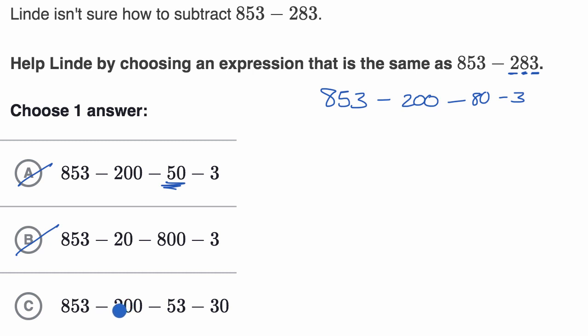What they're doing is they're subtracting out first the 200. That's this part right over here. So that makes sense. They're subtracting out first that, and then they're subtracting out 53 and then subtracting out 30. Well, that is the same thing as subtracting out 83, because subtracting 83 is the same thing as subtracting out 53 and then subtracting 30. 53 plus 30 is 83.